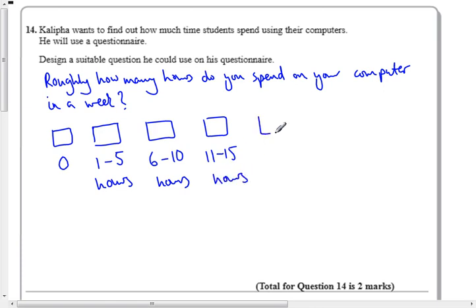And then I'm going to have a box that says more than 15 hours. So then everyone's got an option to tick. If they don't have a computer or they don't use one, nothing. If they use it a lot, they've got an option here for anything more. And then they have some times that they can fill in, but there's no overlaps.